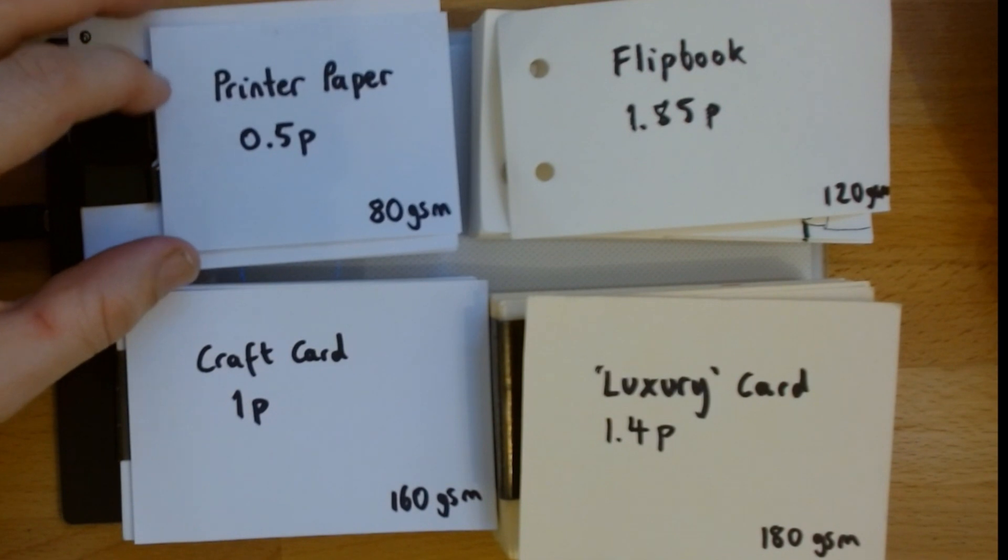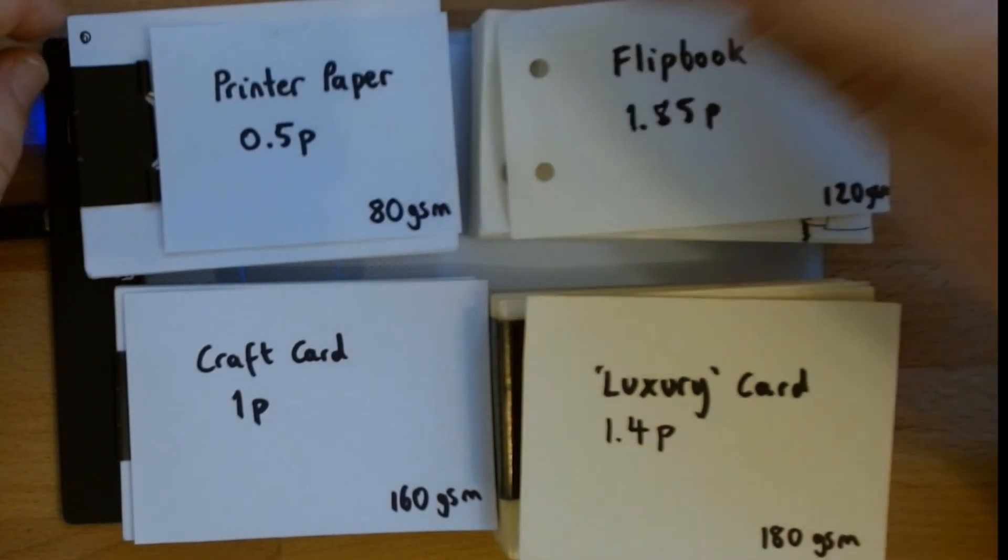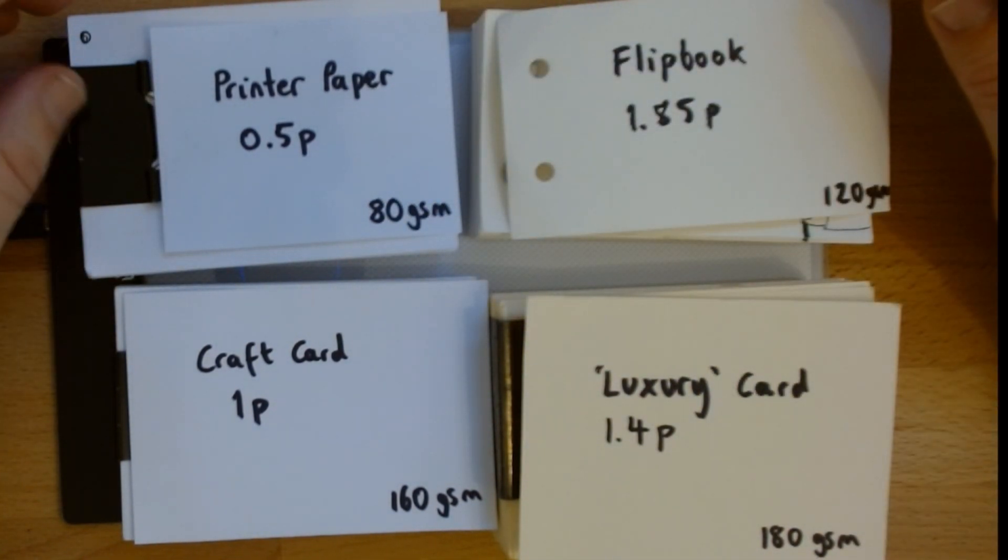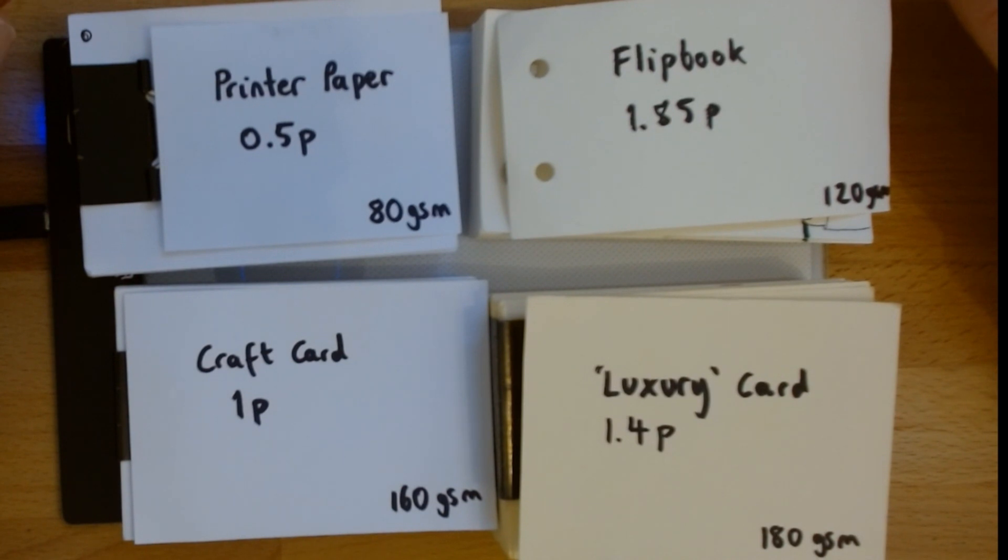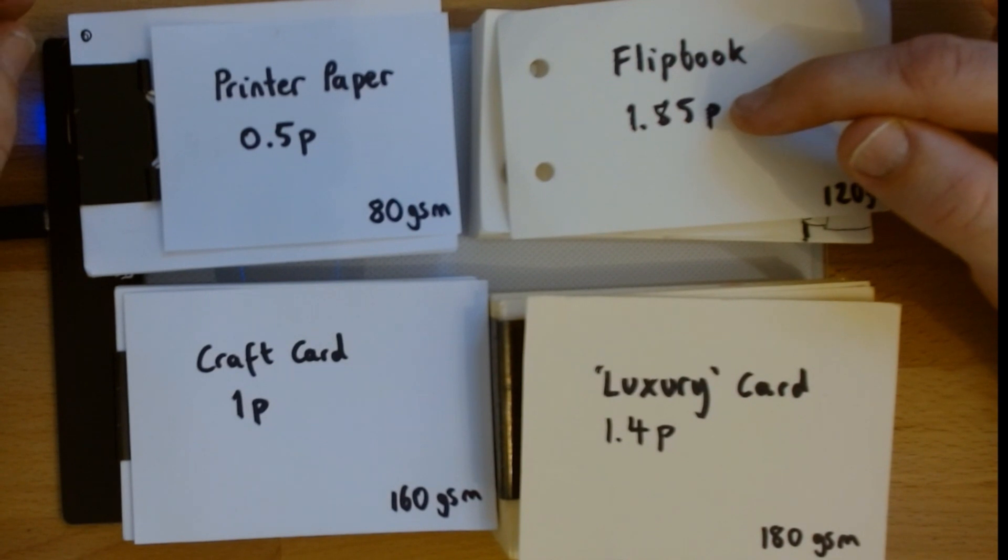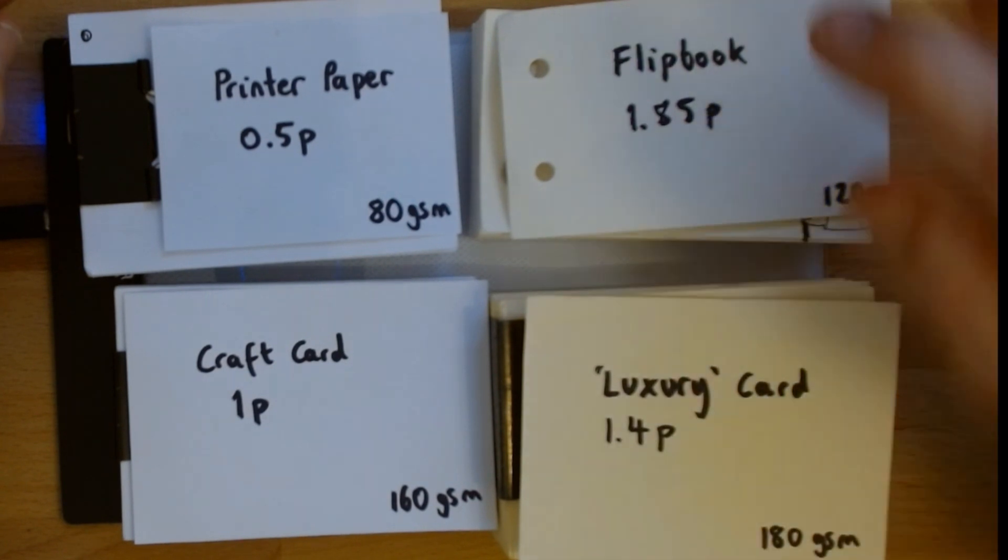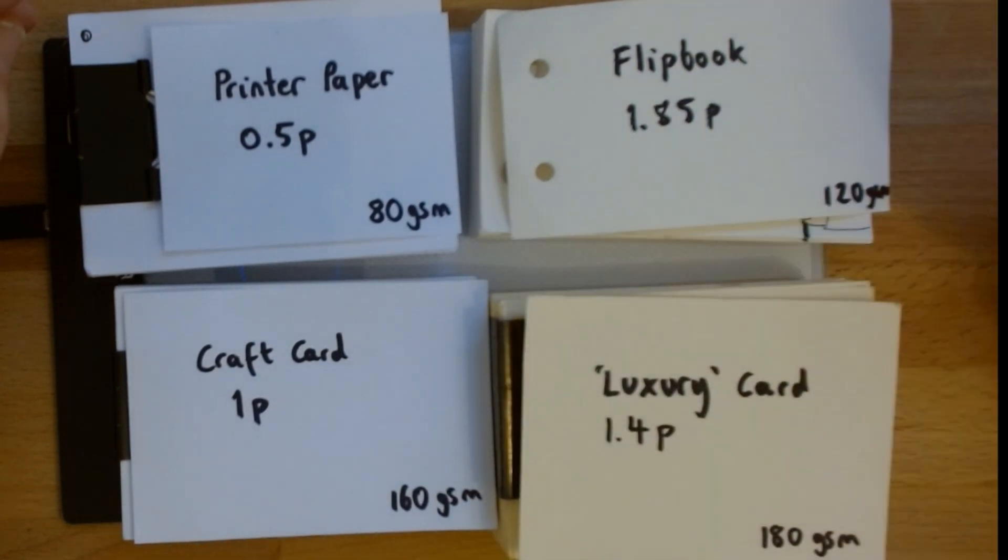The first thing to talk about is the price. Printer paper is half a penny, works at half a penny a sheet. That's assuming you cut each A4 sheet into eight. You've got your flipbook, which is the most expensive, 1.85p, so that's almost four times the price, and then these two in the middle at 1p and 1.4p.